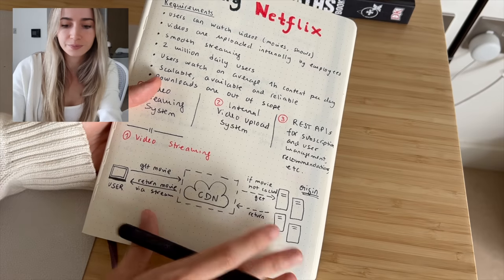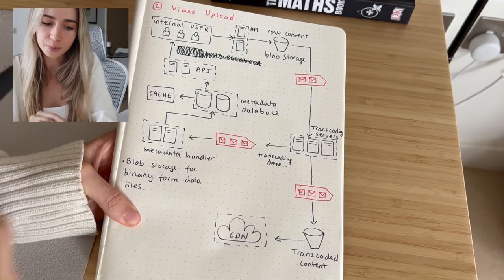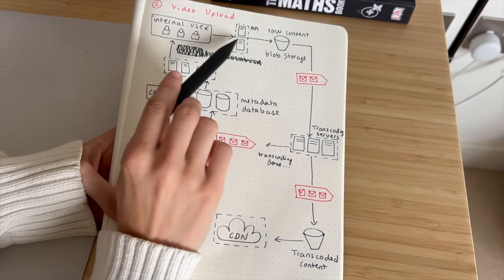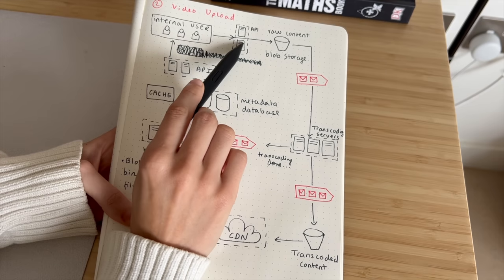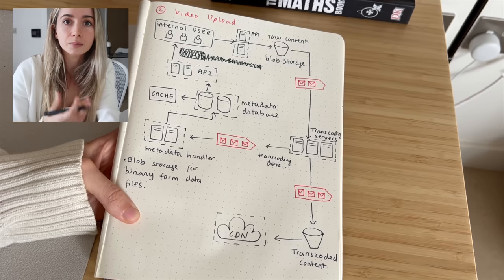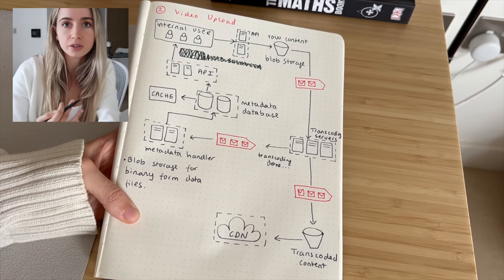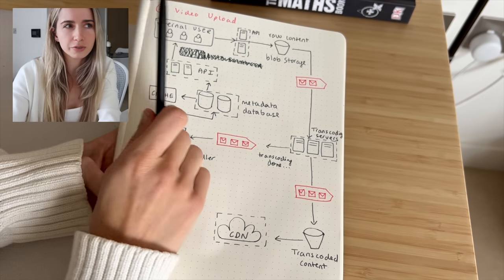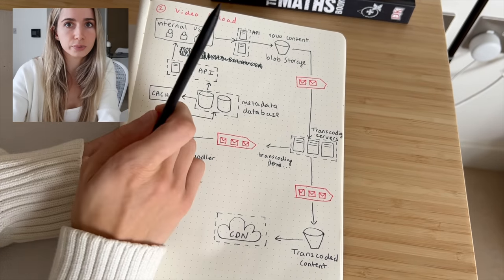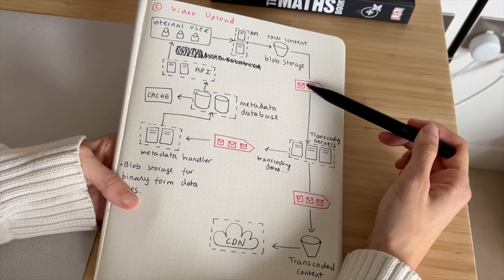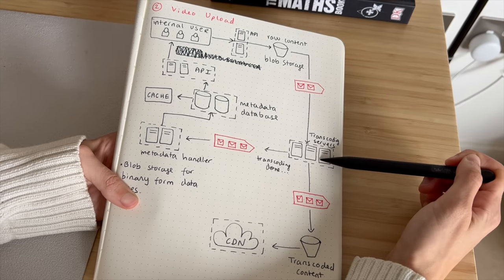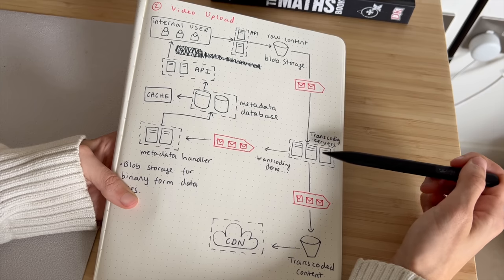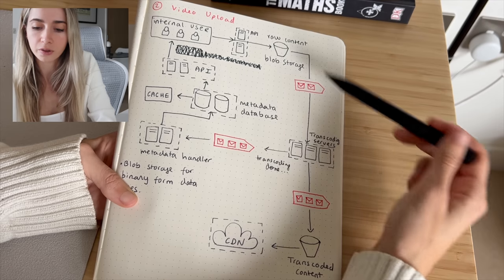Now let's look at the video uploading feature. An internal user wants to add a new movie to our platform's content selection, so an upload request is sent to an API which in turn uploads the video to blob storage. Blob storage means you have a data lake which stores data in binary format — a good example is Azure Blob Storage or Amazon S3. Once the video is uploaded, an upload completion event is queued so that it can be consumed by the transcoding servers. This layer is responsible for transcoding a movie into the format required for the CDN. The queue is there so we can decouple both parts of the system — we don't risk throttling the servers and we don't risk missing out on any information.